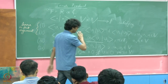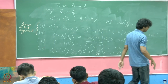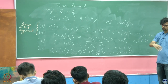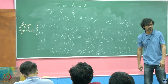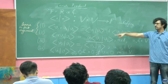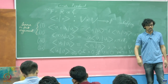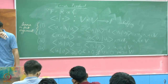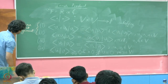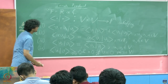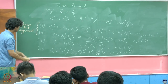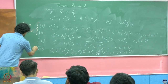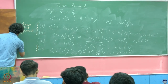Everything else that comes is a consequence of these four points in the definition of an inner product. You can cook up your own inner product and name it after yourself, as long as it satisfies these four properties. This last property is what we call positive definiteness.